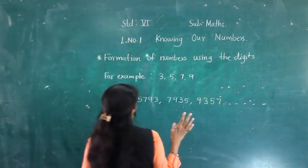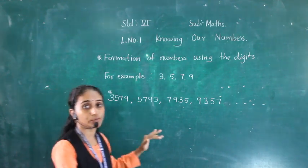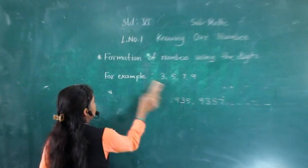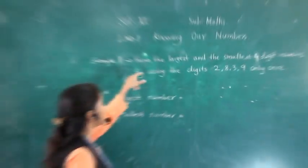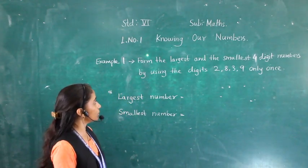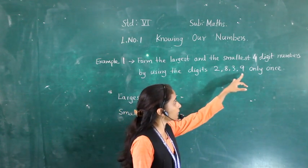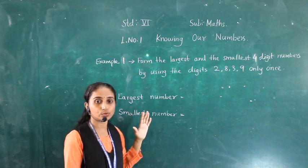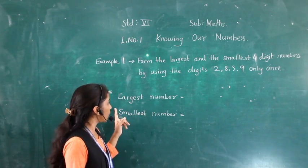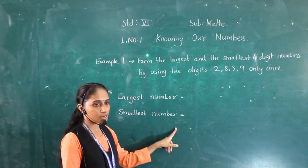Now using some set of digits, we are going to form the largest numbers and smallest numbers. Example 1: Form the largest and the smallest 4-digit numbers by using the digits 2, 8, 3, 9 — each only once.